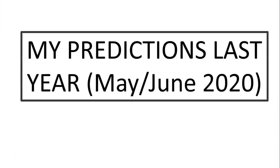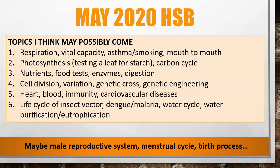First, let me take a look at my predictions for last year, May/June 2020. Obviously last year there was no biology paper two, so we only have the predictions for May 2020 human and social biology. Out of the topics I predicted, cell division came, genetic cross came, and a question on cardiovascular diseases came.